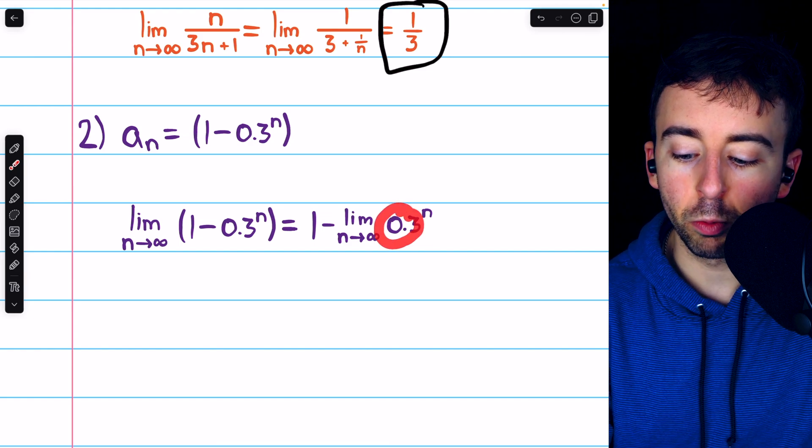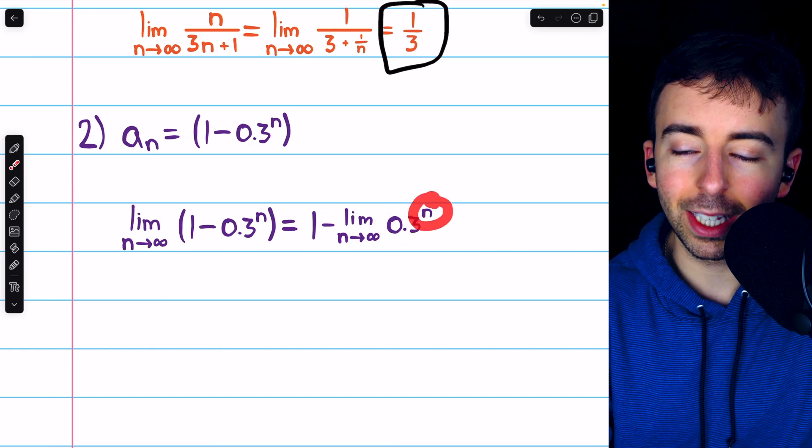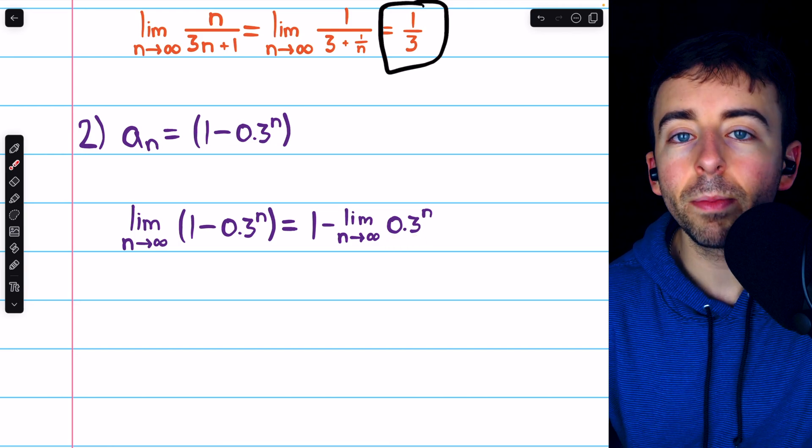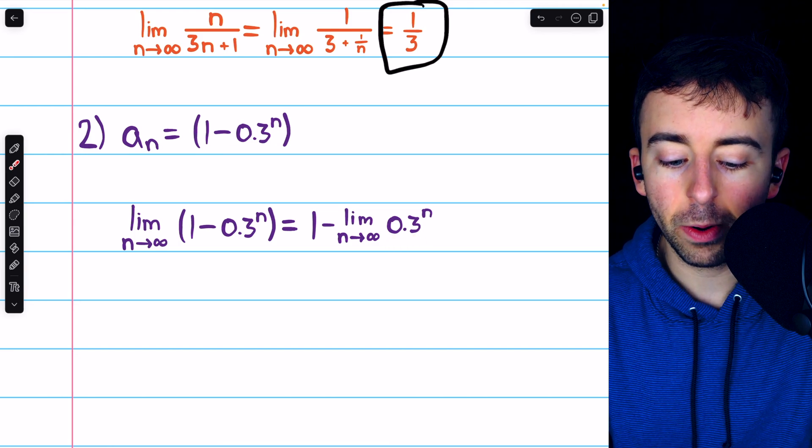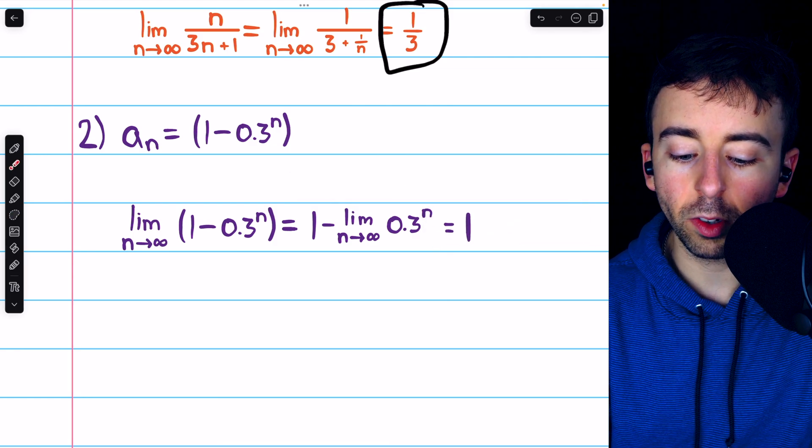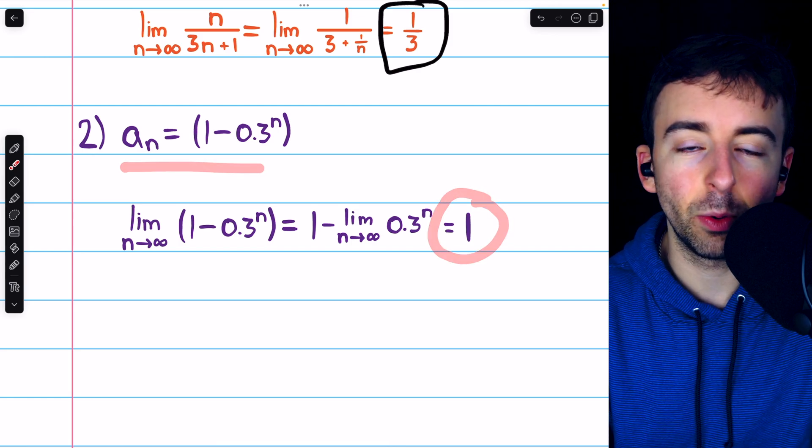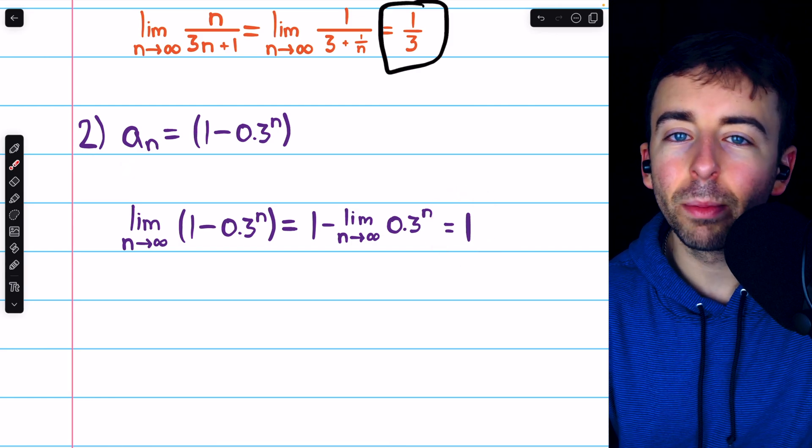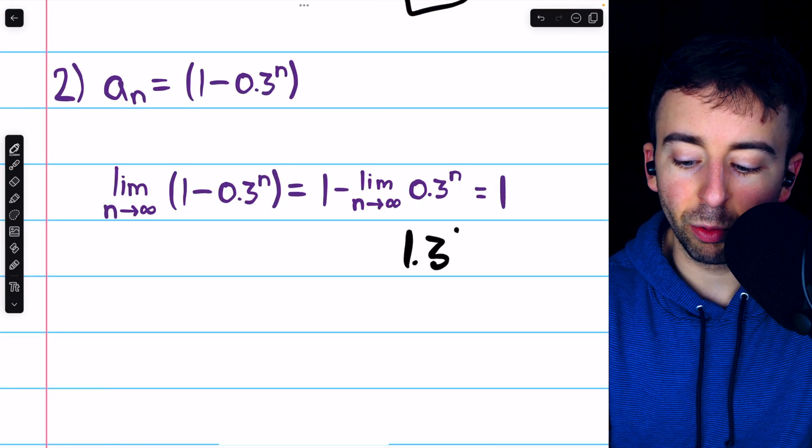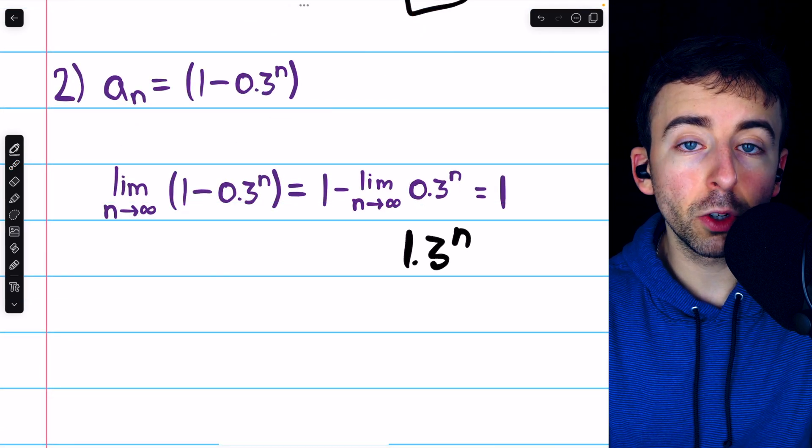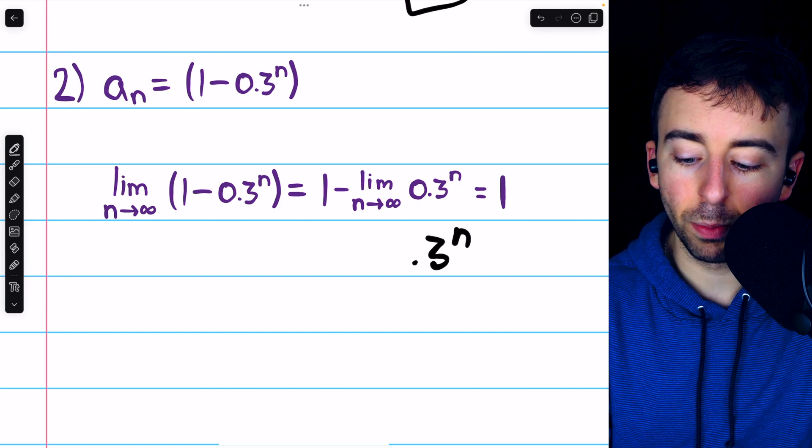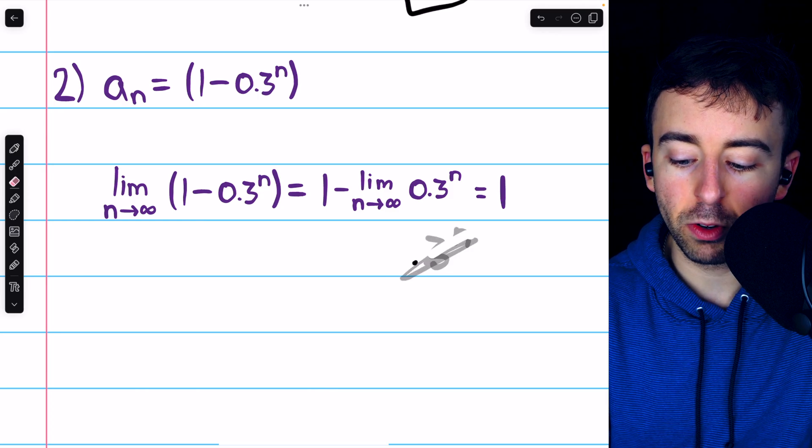Any time you have some number raised to what we might informally call an infinite power, if that number has a magnitude less than 1, it's going to approach 0. So this is just 1 minus 0, that's what it's approaching, which is of course 1. That's the limit of this sequence. It will never quite get there, but it will get arbitrarily close. And again, if this number was something else like 1.3 to the n, then instead of getting arbitrarily small, it would get arbitrarily large. But its magnitude is less than 1, it's 0.3, so it does get arbitrarily small.